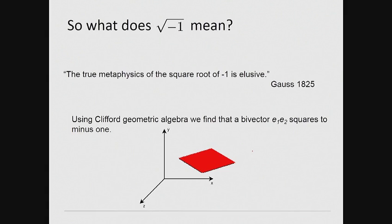Extensive use of complex numbers is made in electrical engineering, even though the unit imaginary is a completely abstract quantity without any real clear geometric or physical meaning. Imaginary numbers first appeared as roots to quadratic equations, which is indeed a fairly abstract setting. Gauss himself acknowledged that the true metaphysics of the square root of minus one is elusive.